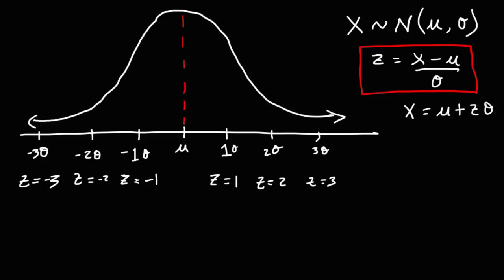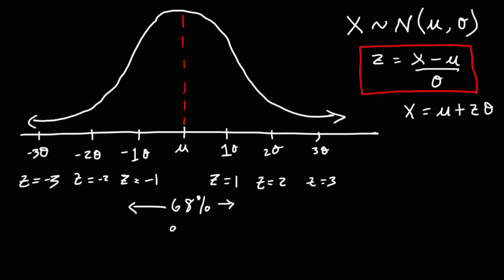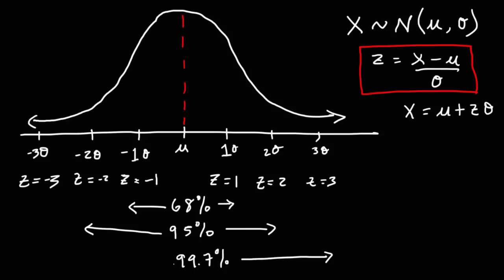There's something called the empirical rule that you need to be familiar with. It tells us that 68% of the x values lie within one standard deviation of the mean, 95% lie within two standard deviations, and 99.7% lie within three standard deviations.